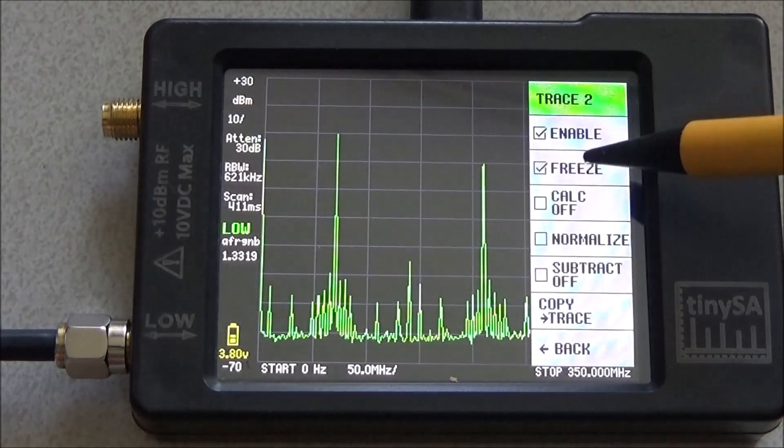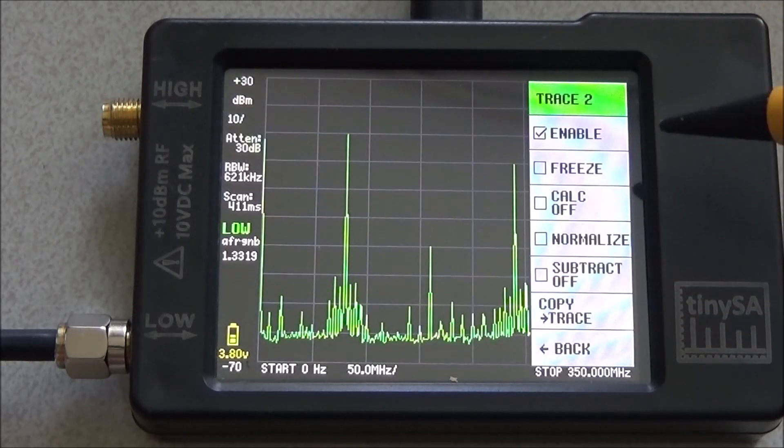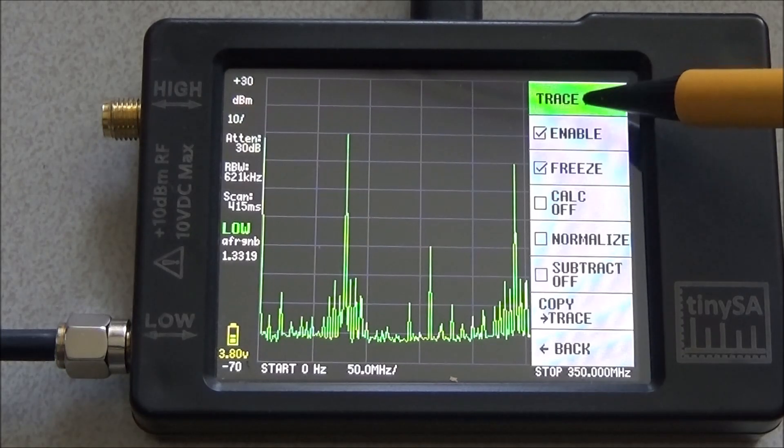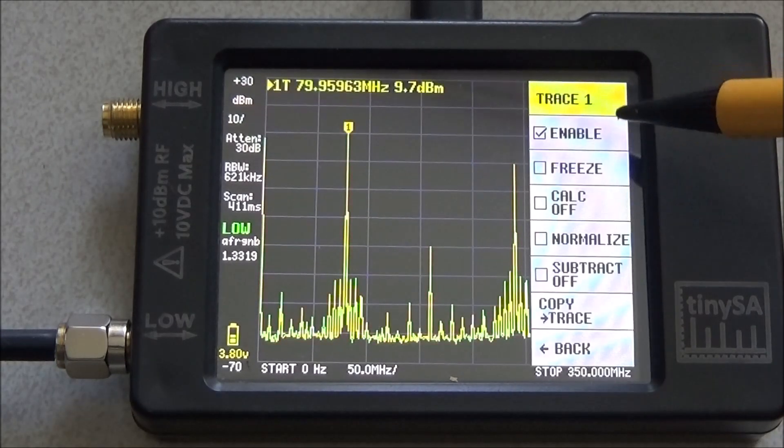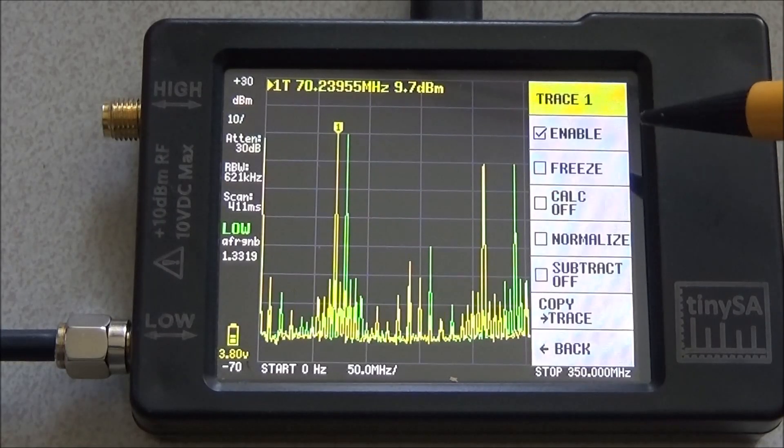I can go to trace 2 and stop the freezing. And now trace 2 has become the live trace. I freeze it again and go back to trace 1, enable it and change the frequency of trace 1.